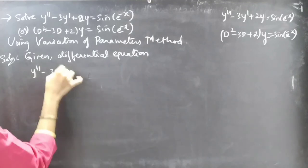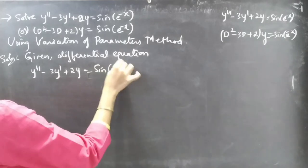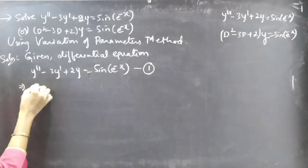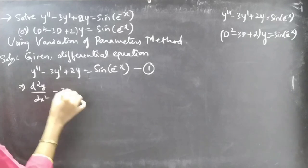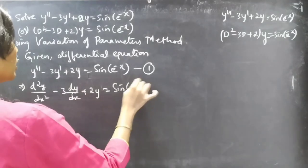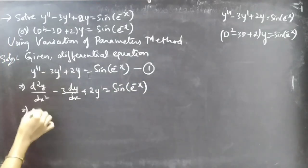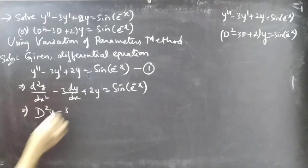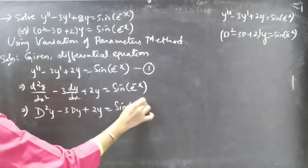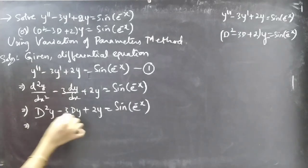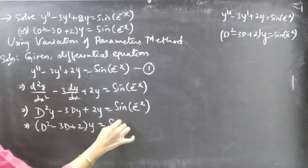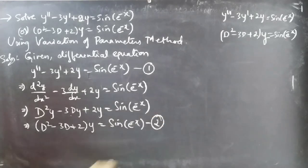The given differential equation is y'' - 3y' + 2y = sin(e^(-x)), consider it as equation 1. We can write y'' as d²y/dx² - 3(dy/dx) + 2y = sin(e^(-x)). Now using the D-operator notation, we get (D² - 3D + 2)y = sin(e^(-x)), consider this as equation 2, which is in operator form.